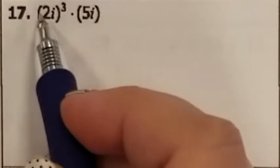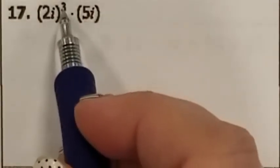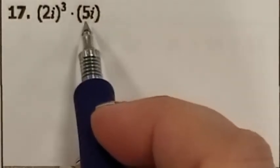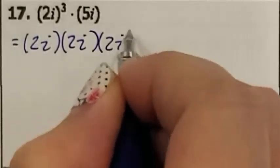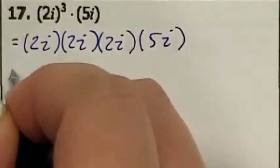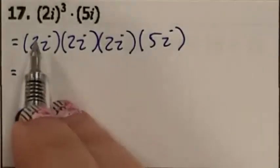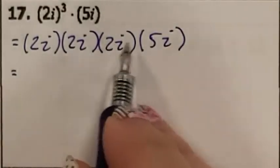Problem number 17: We have the quantity of 2i, all raised to the third power, times 5i. So the quantity of 2i, all raised to the third power, meant you had 2i three times. And then we have 5i. Just like our previous problem: 2 times 2 times 2 times 5.